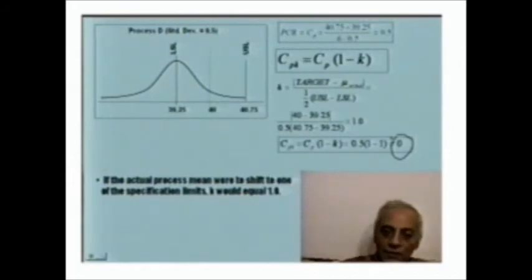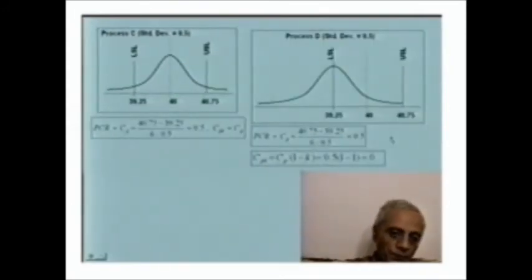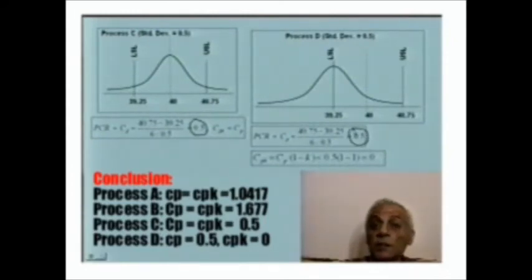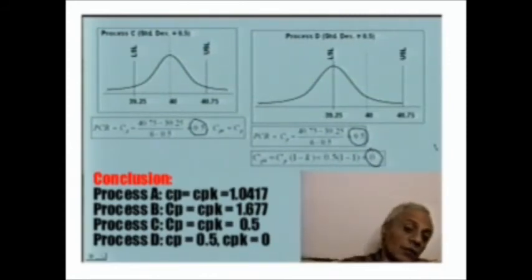Keep in mind that the CPK and the CP exhibit the same interpretation. Equal one means exact. Greater than one is capable. Less than one is incapable. So what does the CPK do for us? It accounts for the recentering or the deviation of the mean of the process from the target value. Very important. So although process C and the process D exhibit the same PCR or CP, process D exhibits a much smaller CPK. And as a result of that, it is the most inferior process that we have to deal with.